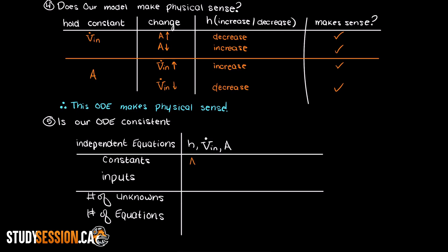So let's add the rest of the variables to their respective categories and as you can see here our number of unknowns is equal to our number of independent equations, which is what we wanted. Therefore, we can say that this ODE is consistent, makes physical sense, and it can now be solved.